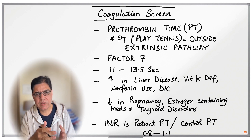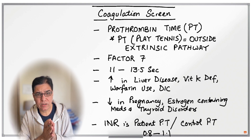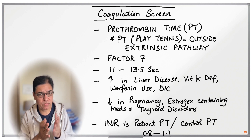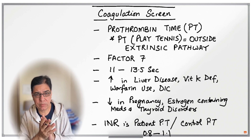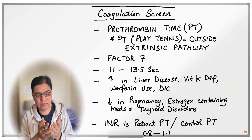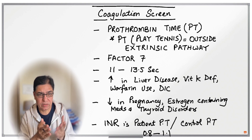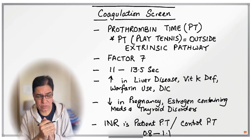Sometimes prothrombin time can be low as well. It usually occurs due to estrogen-containing medications such as contraceptive use. It can also occur in cancer, severe infections, and thyroid disorders.